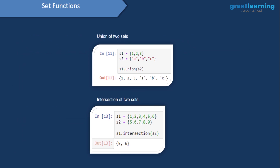Now we'll work with set functions. We have two sets s1 and s2 — s1 has elements 1, 2, and 3, and s2 has elements a, b, and c. To combine all elements from both sets, we use the union operator: s1.union(s2) gives a union of s1 and s2, resulting in 1, 2, 3, a, b, and c. For intersection, if s1 has elements 1 to 6 and s2 has elements 5 to 9, then s1.intersection(s2) returns the common elements 5 and 6.